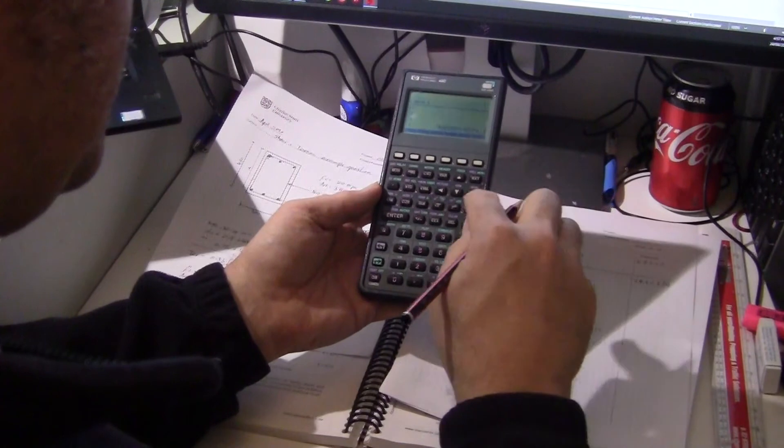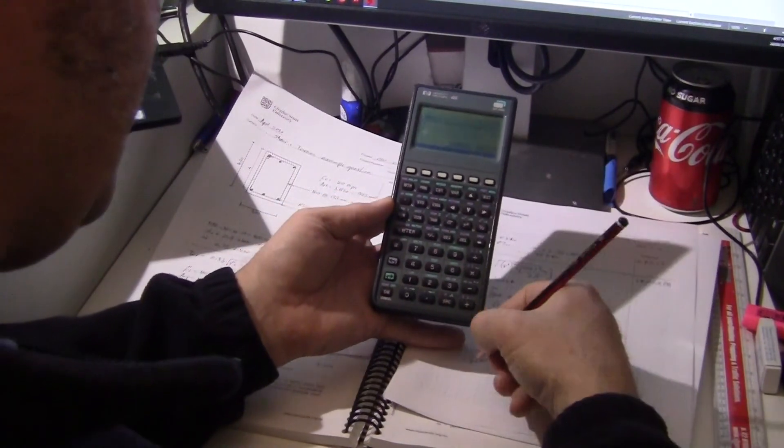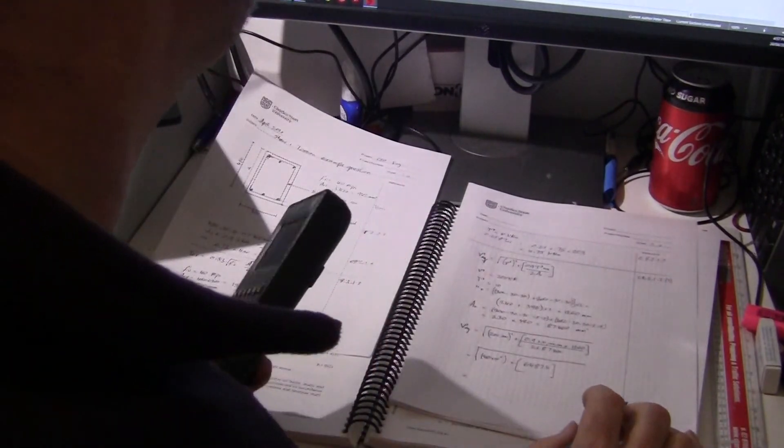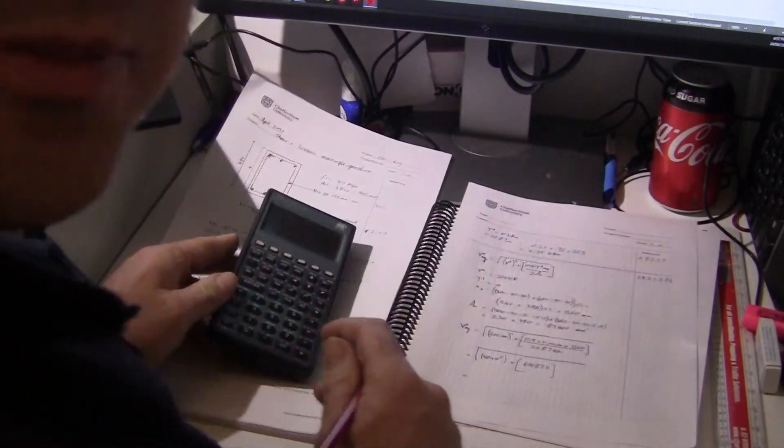Add those together, take the square root, and that ends up with the wrong answer. Where'd we go wrong? Hang on, I'll pause while we have a look.